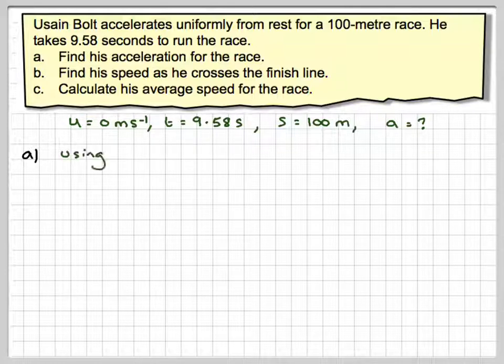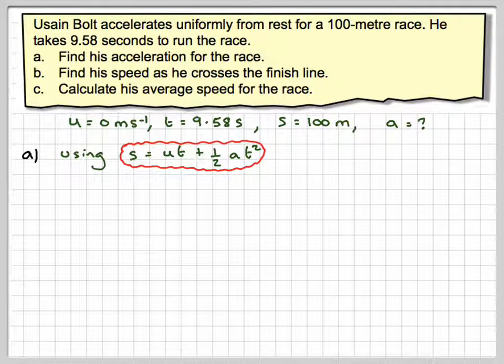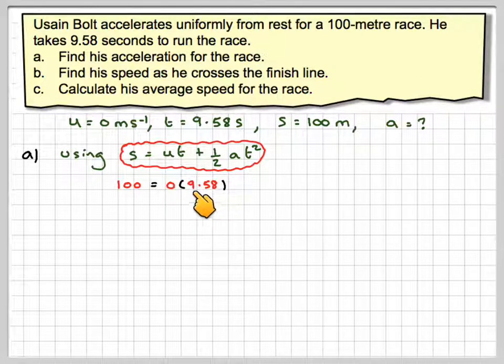Using s equals ut plus one-half at squared to find the acceleration, we have 100, because that's how far he runs, equals the initial velocity, which is 0, times the time taken, which is 9.58. This bit will be equal to 0 anyway,